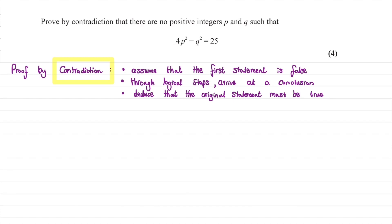There are three steps that you generally have to follow when solving a question like this, and I've listed them here. First, you want to assume that the original statement is false. Then, through logical steps, arrive at a conclusion. Finally, from that conclusion, deduce that the original statement must be true.